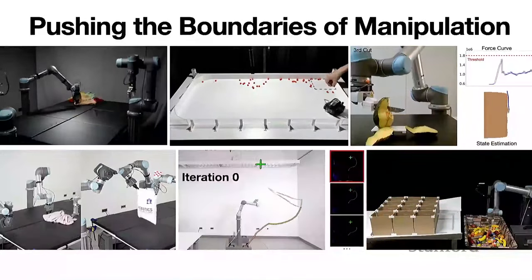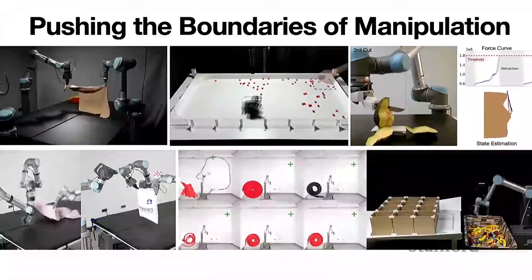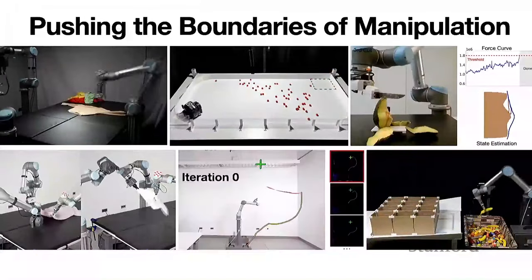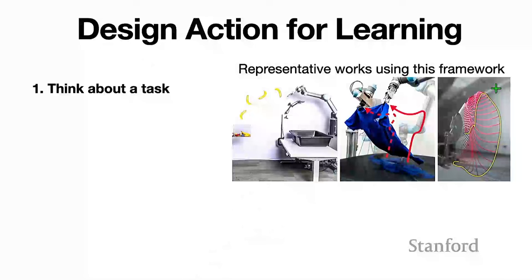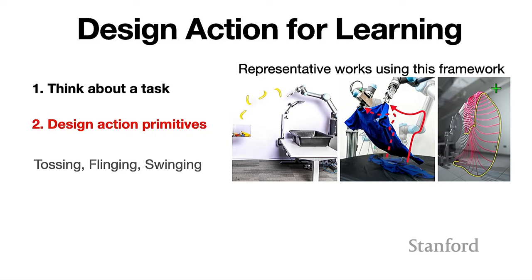Throughout all these projects in the past, one thing that our group has become quite good at is designing those very task-specific action primitives. For many of the projects I just showed, it typically works with general workflows like this: you start by thinking about the tasks you want to work on — for example, tossing objects or unfolding cloth — and the first step is to sit down and think about what action primitives the robot needs to learn, then carefully design those, like tossing actions, fling actions, and swing actions.